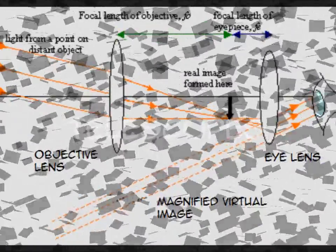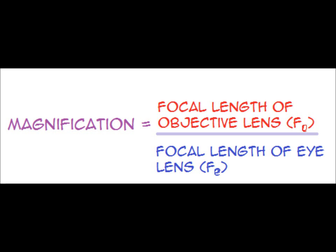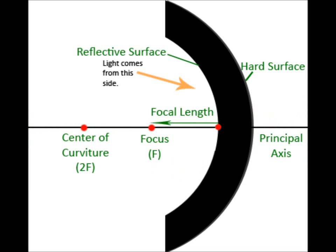Telescopes: a simple refracting telescope uses two converging lenses with different powers. The objective lens collects light and forms an image of it. The eyepiece magnifies the image so it can be seen. Magnification equals the focal length of the objective lens over the focal length of the eye lens. Most astronomical telescopes use a concave mirror instead, as it's cheaper, easier, and the colours aren't spread out.